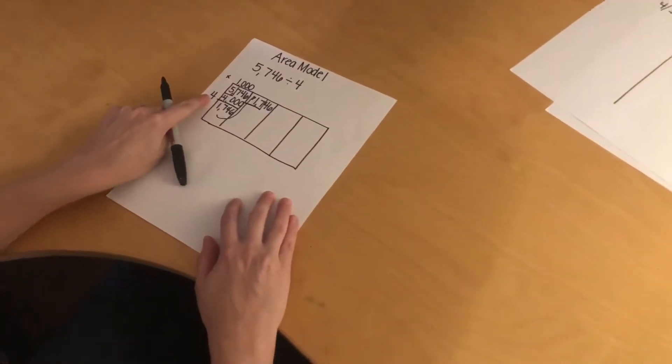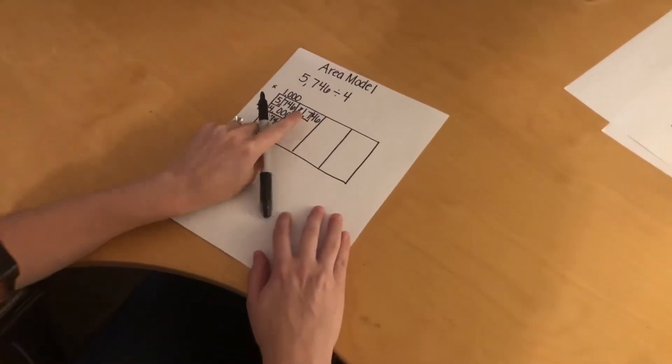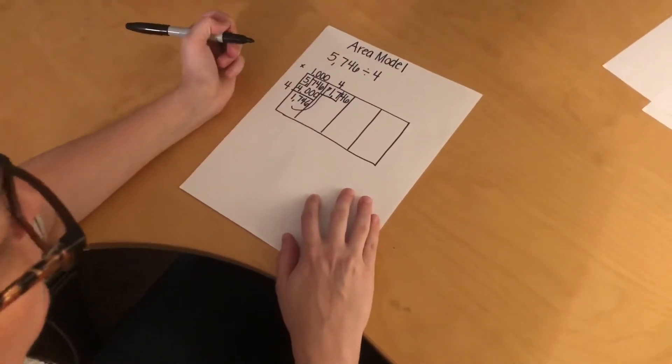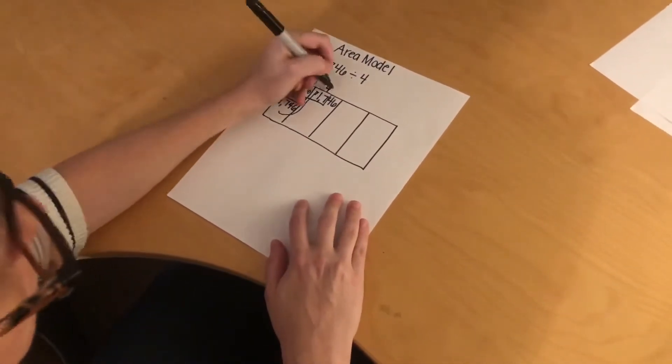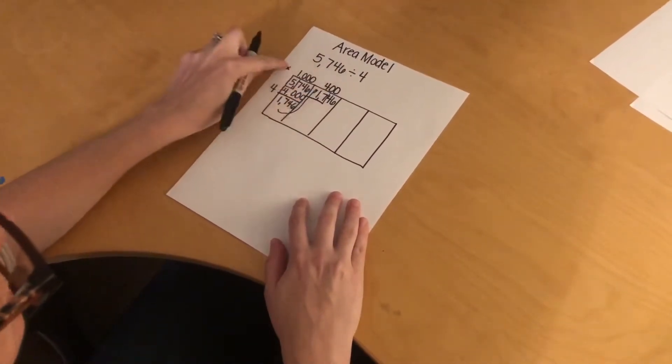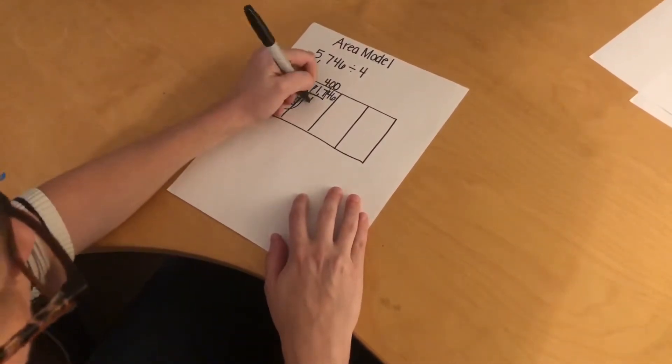Now I need to think how many times does 4 go into 17? 4 goes into 17 four times. But since I'm in my hundreds place, it's not just 4, it's 400. Then I'm going to multiply 400 times 4, which would be 1,600.